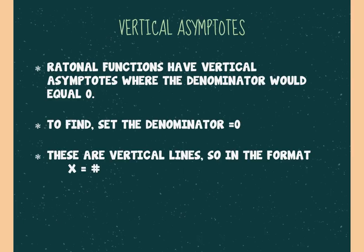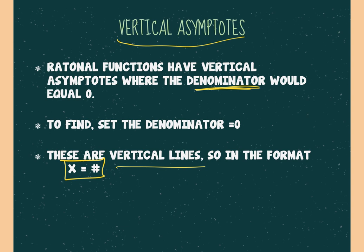The vertical asymptotes come from your denominator. The vertical asymptote occurs where your domain is restricted. On domain, we say it can't equal that value. Your vertical asymptote is where your denominator is undefined. You're going to factor denominators, and you may have ones that aren't factorable or don't exist — in that case you say no vertical asymptotes. These are vertical lines, so they have to be in the format of x equals. If you don't put x equals, you will get docked points.